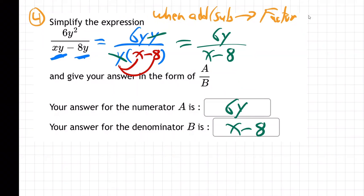So the moral of the story is you can't cancel added or subtracted items, only multiplied items. And so you got to factor.